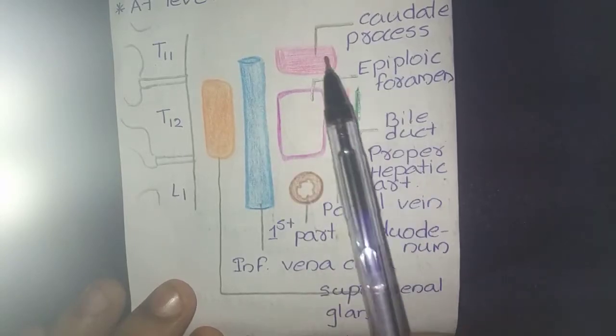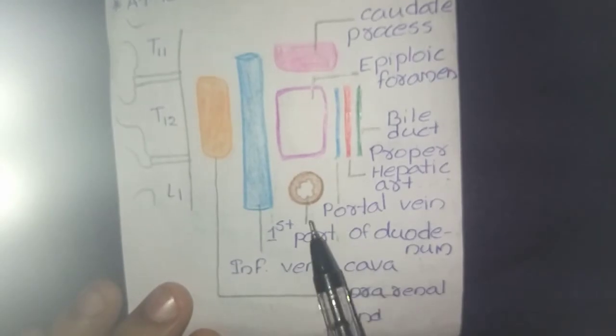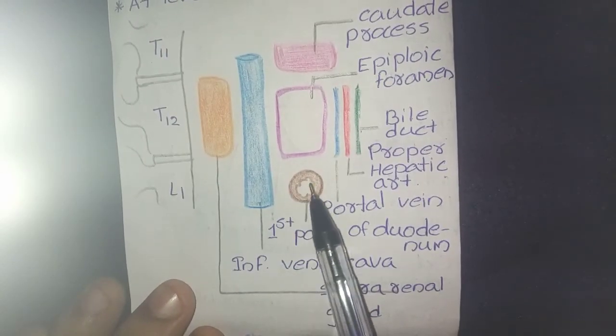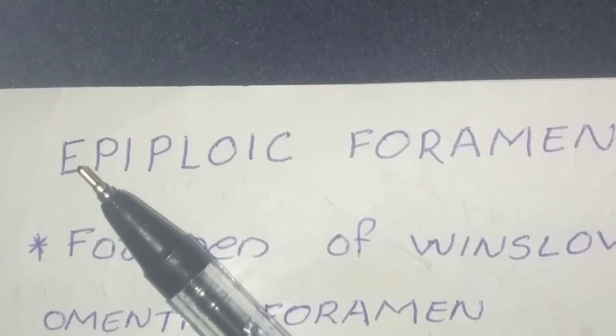And superiorly it is by the caudate process of the liver, and inferiorly it is by the first part of the duodenum which is shown here. That's all for the topic Epiploic Foramen.